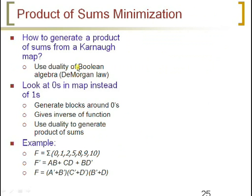Let us take an example of how to generate a product of sums from a K-map. Use duality of Boolean algebra or De Morgan's law. Look at zeros in the map instead of ones — up to now we have gone with groupings of ones, but from now we go with groupings of zeros to find max sums. Generate blocks around zeros, which gives the inverse of the function, then use duality to generate product of sums. These are the three steps to follow for reducing the expression.